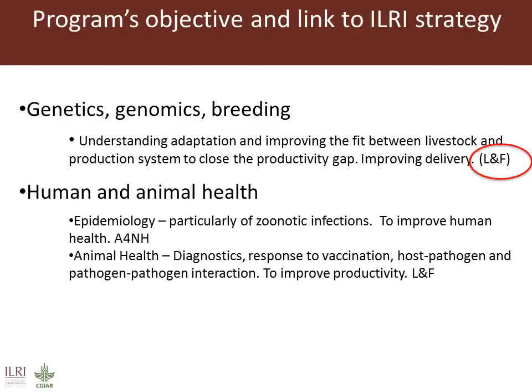A second category of activities within animal biosciences is human and animal health. One very strong program is epidemiology, and particularly epidemiology of zoonotic infections. That's led by Eric Favre and aims to improve human health, and is aligned with the A4NH CRP.